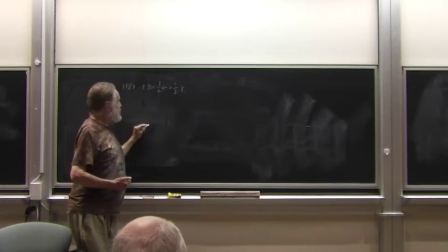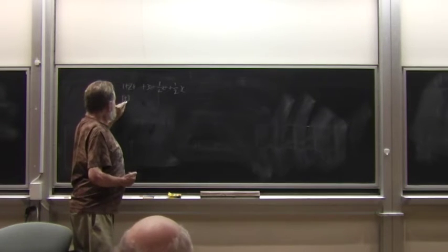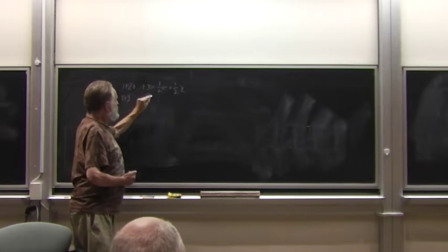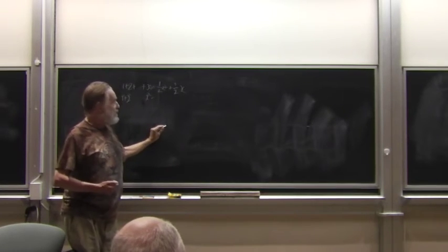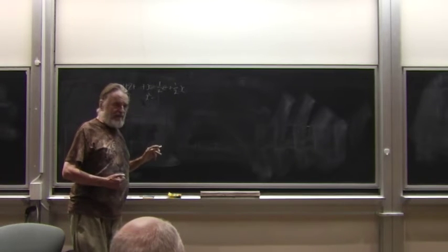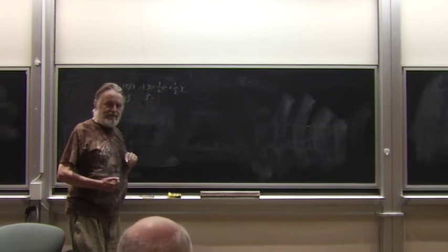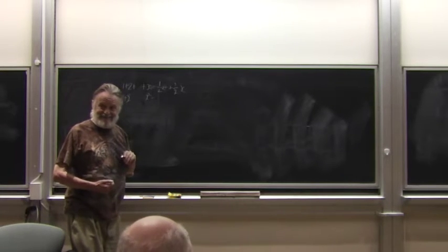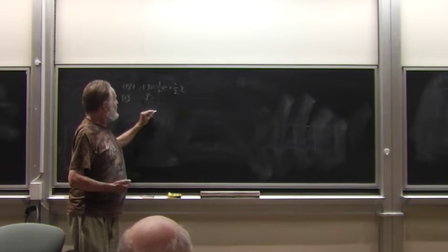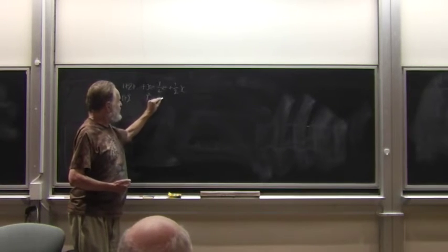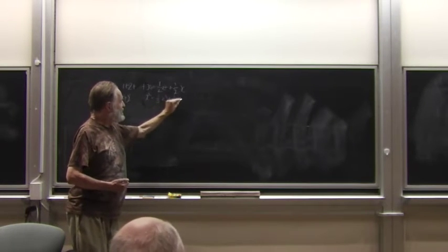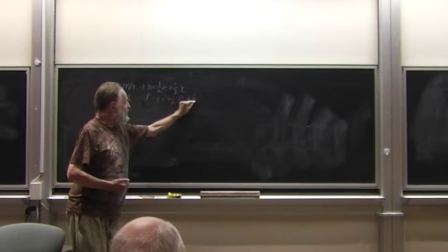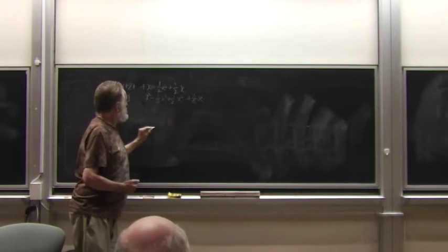Okay, somebody give me 1 squared plus 2 squared, et cetera. x cubed over 6, right? No, it's not x cubed over 6. It's x times x plus 1 times 2x plus 1 over 6. That is correct. However, it's not in the correct form. It's one third x cubed plus one half x squared plus one sixth x.